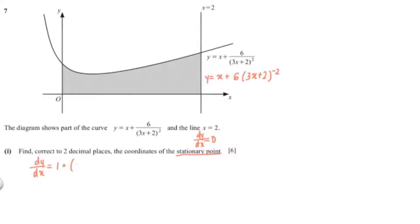So I'm going to differentiate the equation using the chain rule, and that would give me 1 minus 36(3x plus 2) power negative 3.